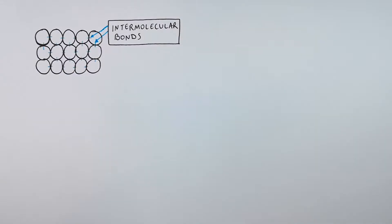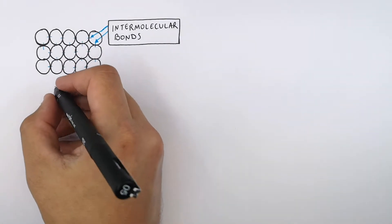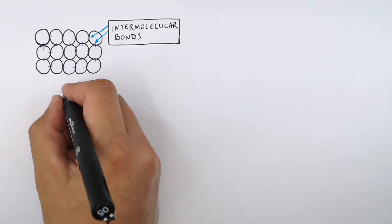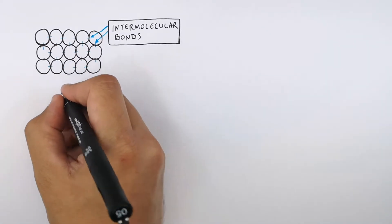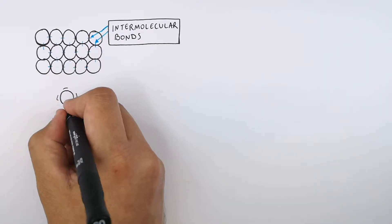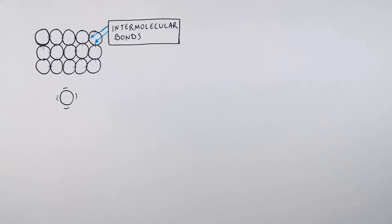The strength of these intermolecular bonds between the particles means that the particles remain in fixed positions, in a fixed regular arrangement. So the particles in a solid have less energy in their kinetic energy stores and the internal energy of the solid than a gas or a liquid. This means that the particles are going to vibrate in a fixed position, as you can see here.